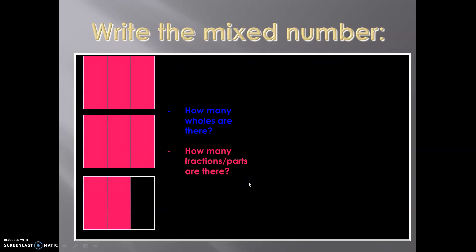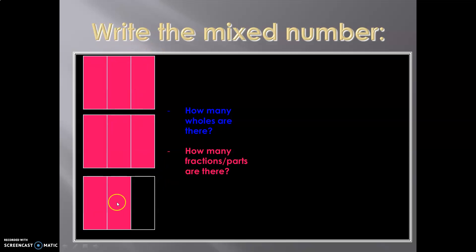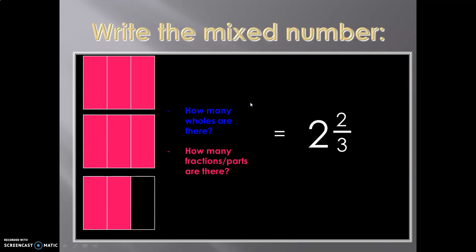Write the mixed number. How many wholes are there? One and two — you can see two squares which are fully shaded. And the third one has only two parts shaded. How many fraction parts are there? So this can be written as two and two upon three.